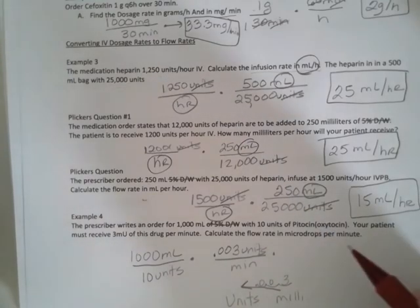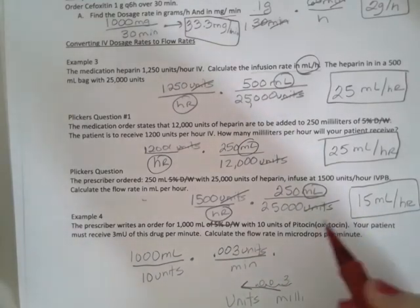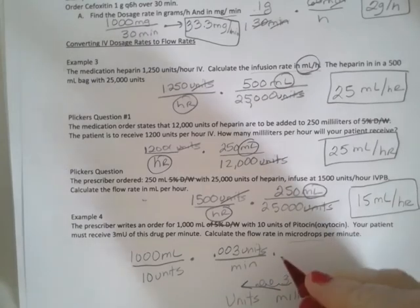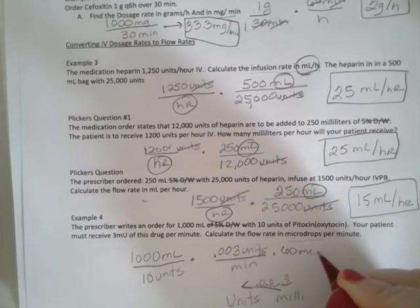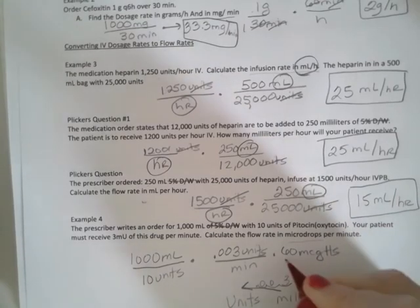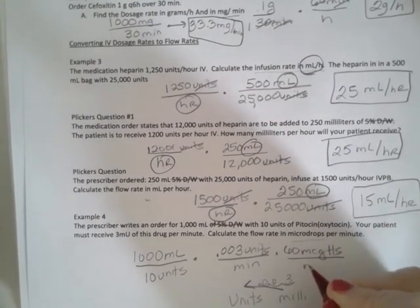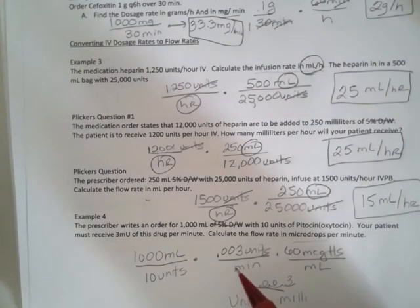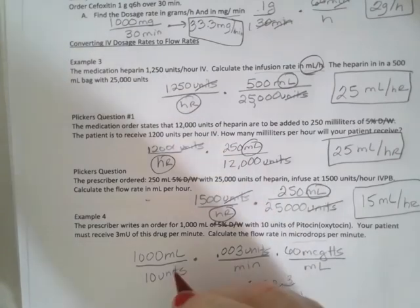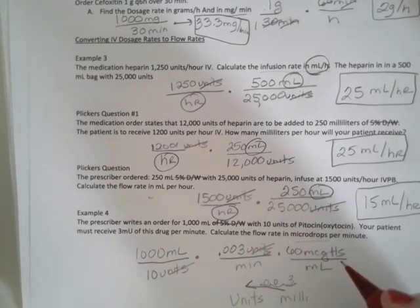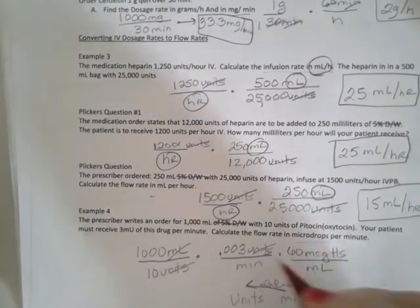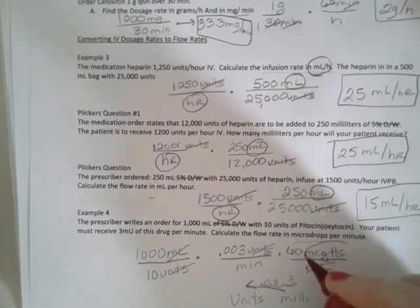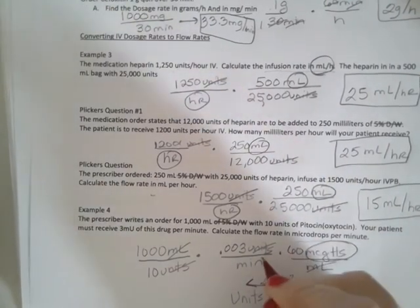And they talk about a micro drop. Remember our micro drop setup is always 60 micro drops per mL. So now calculate the flow rate in micro drops per minute. So I have units, units, mLs, mLs, and I have micro drops per minute.